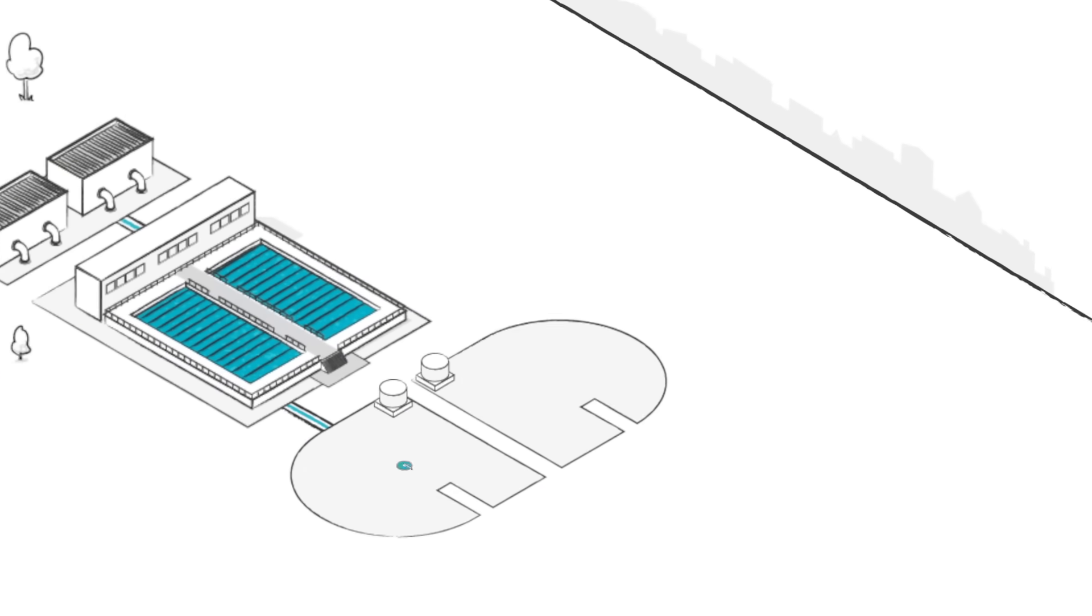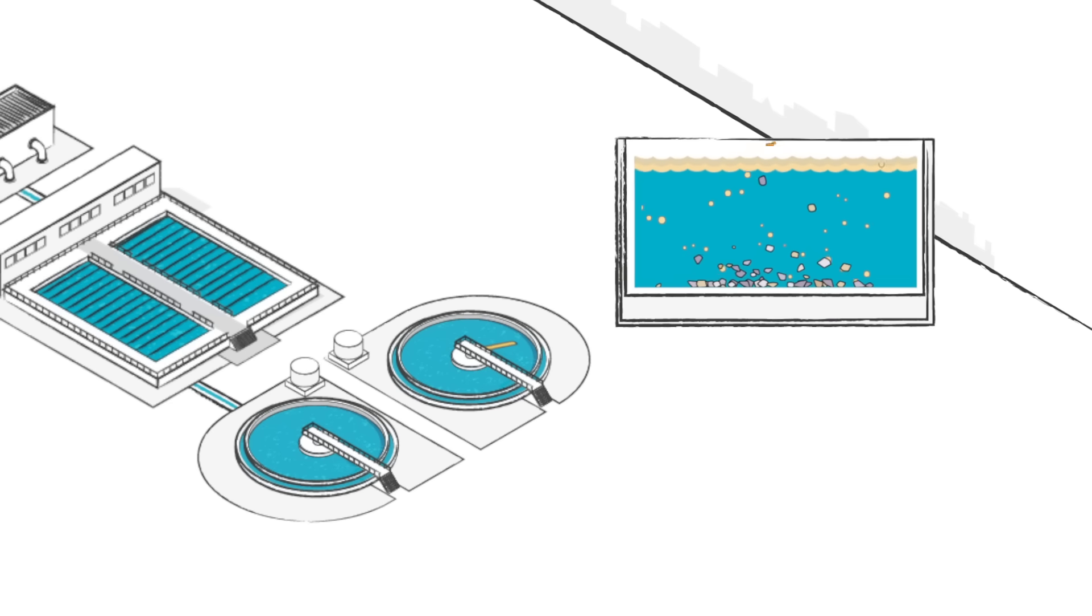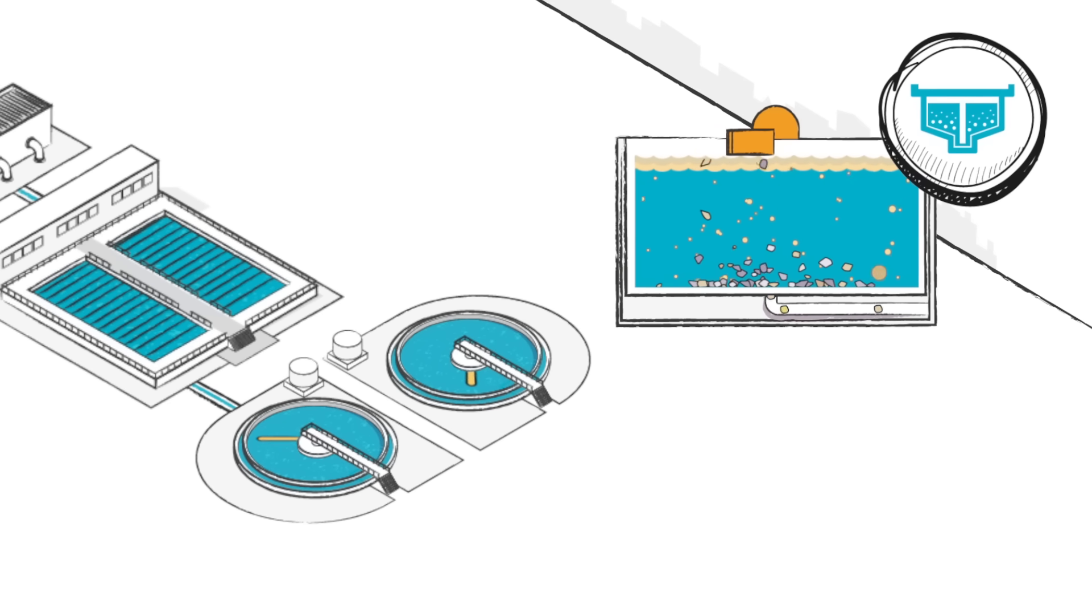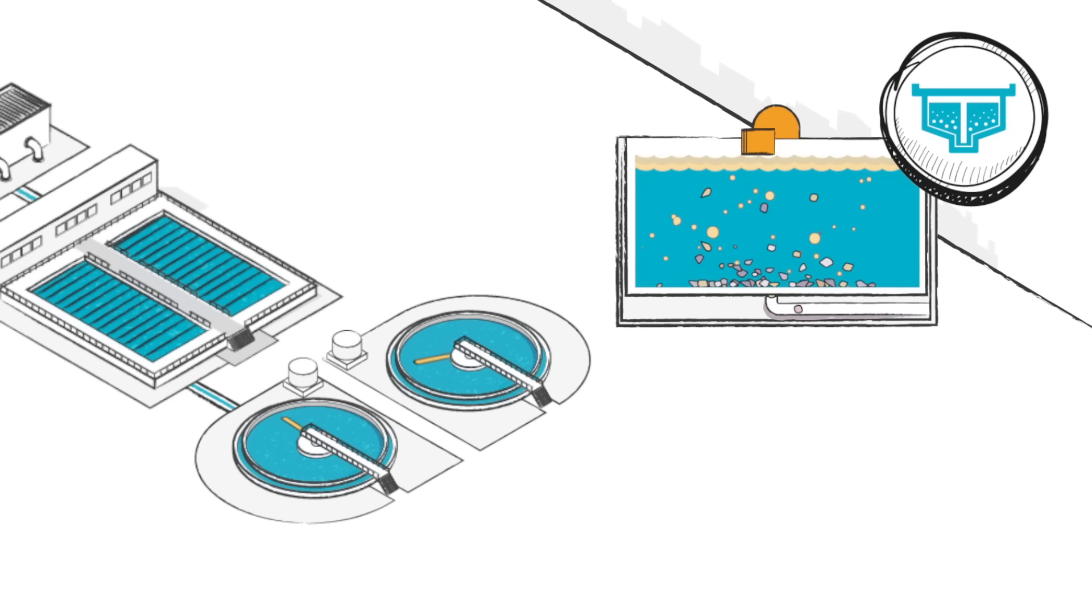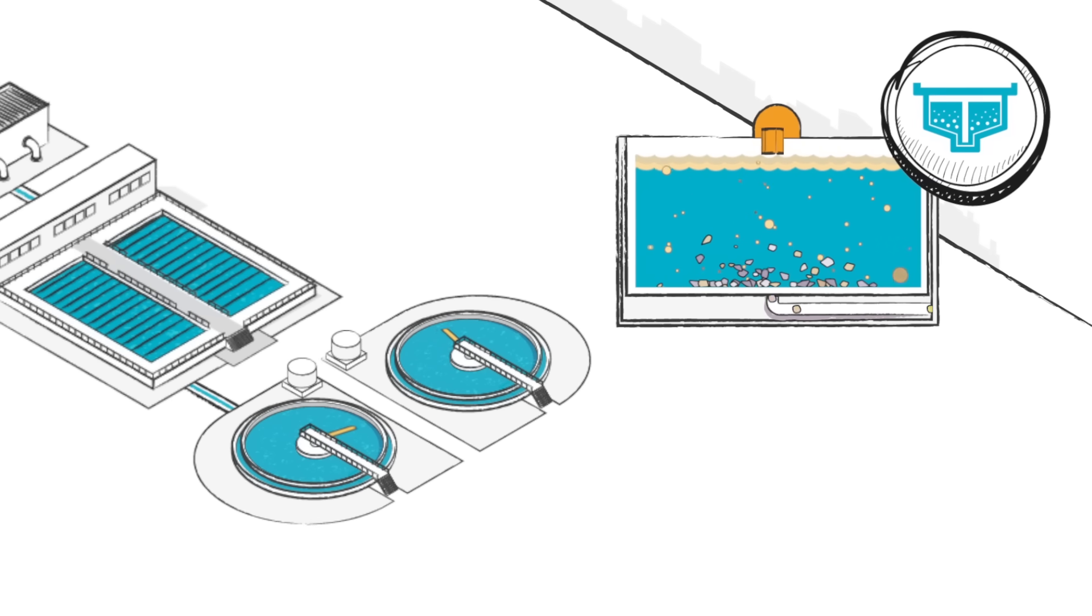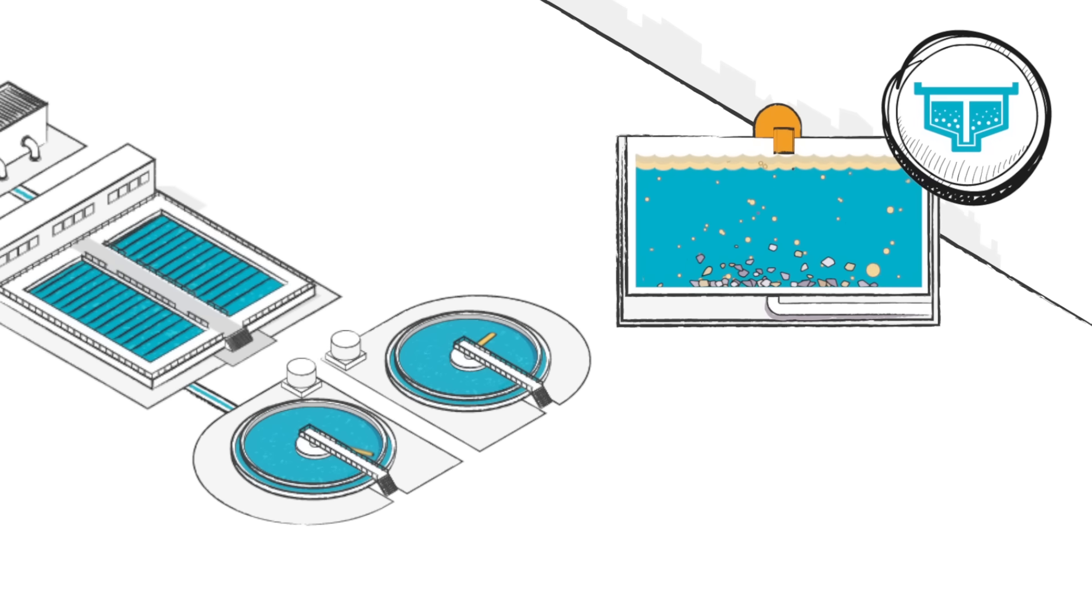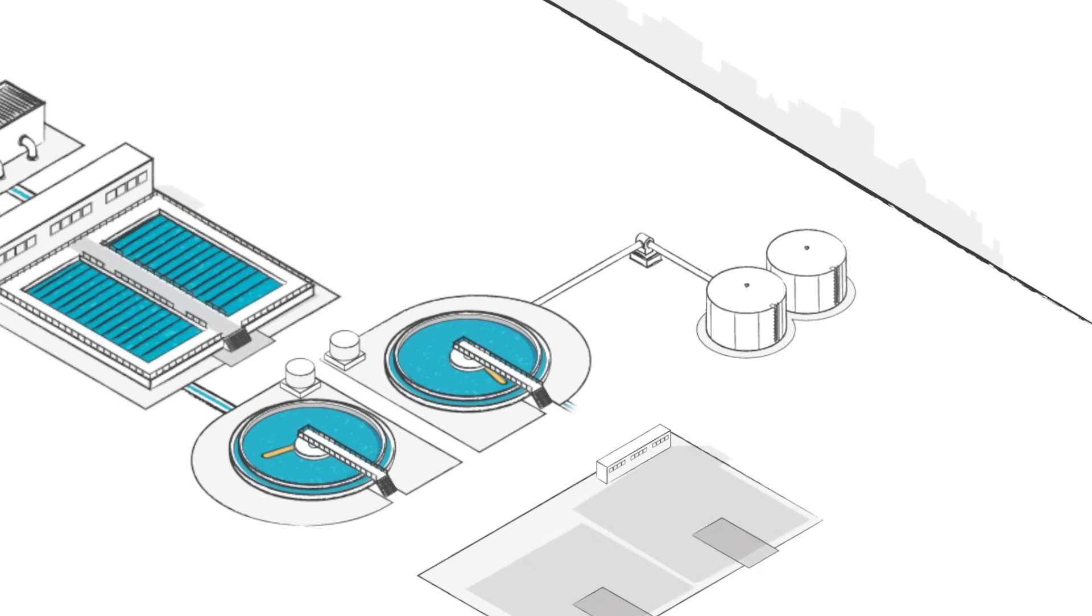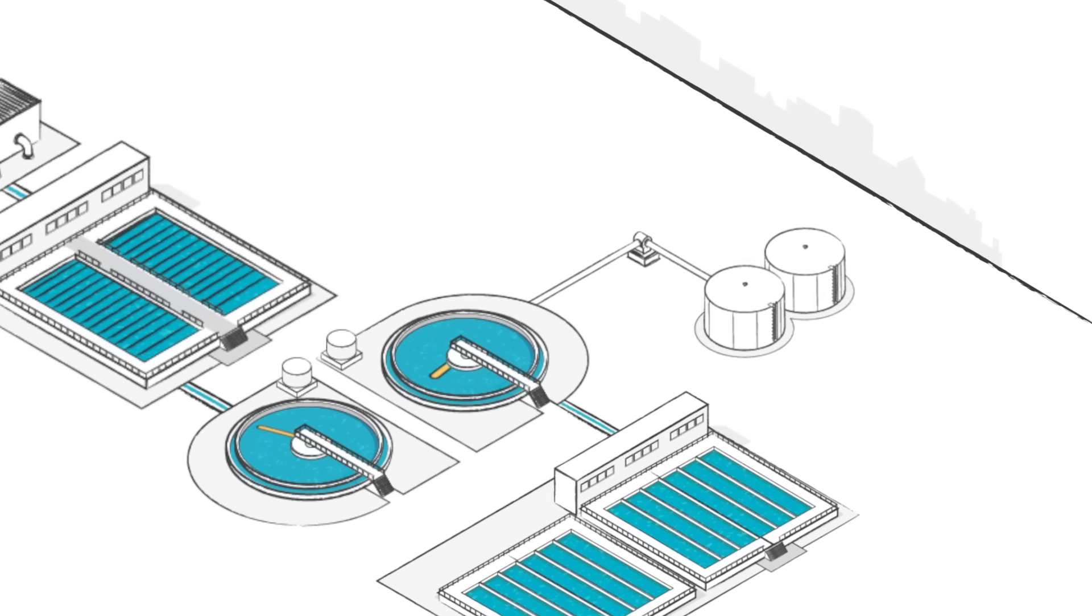The water is then sent to large clarifiers to settle. An arm that takes an hour to rotate once skims off fats, oils, and grease that float to the top. Any solids that sink to the bottom are scraped off and pumped 12 miles to anaerobic digester tanks at South Shore, where the gas is captured and used to help power the plants.